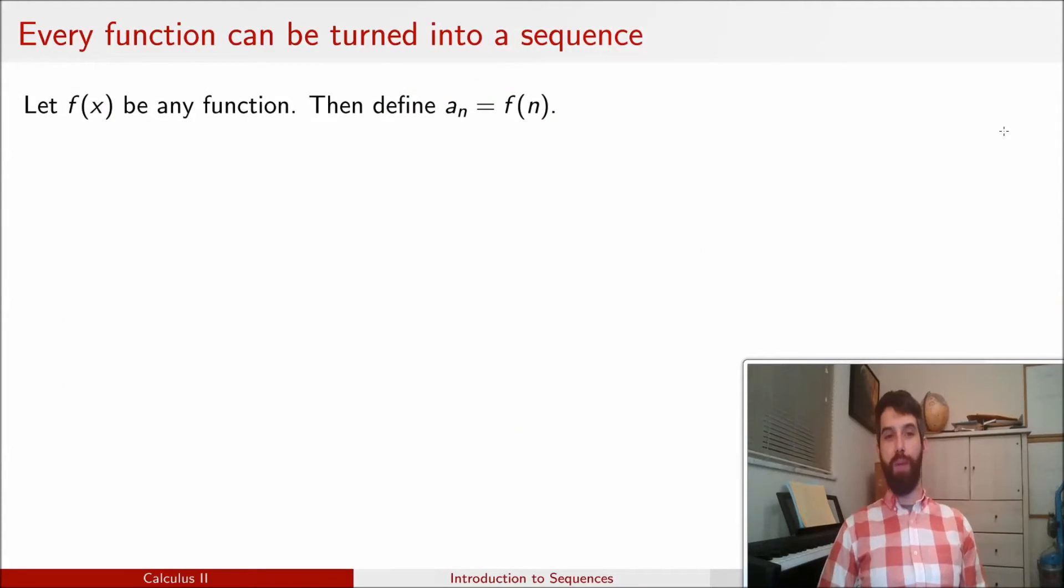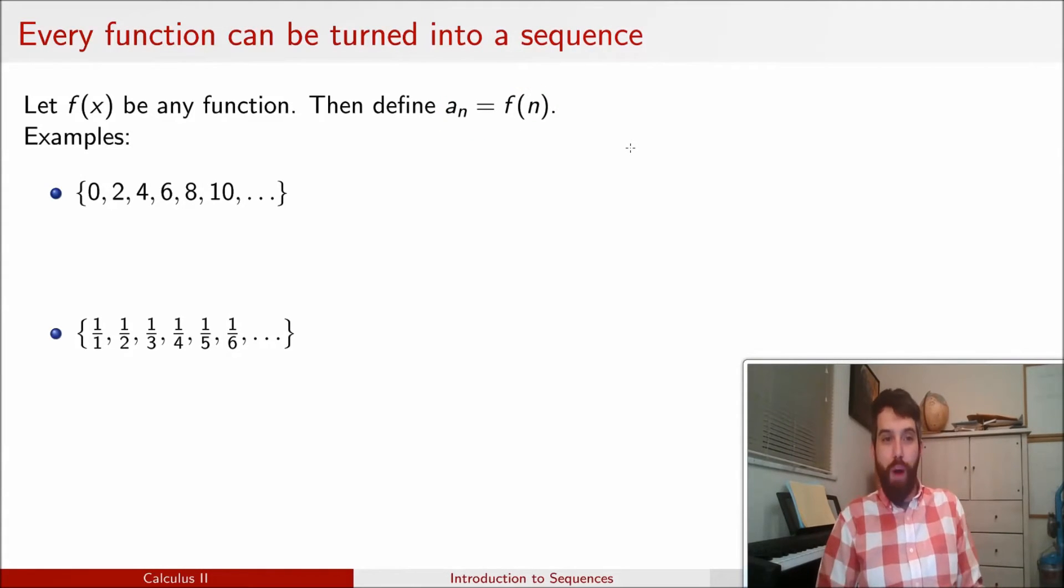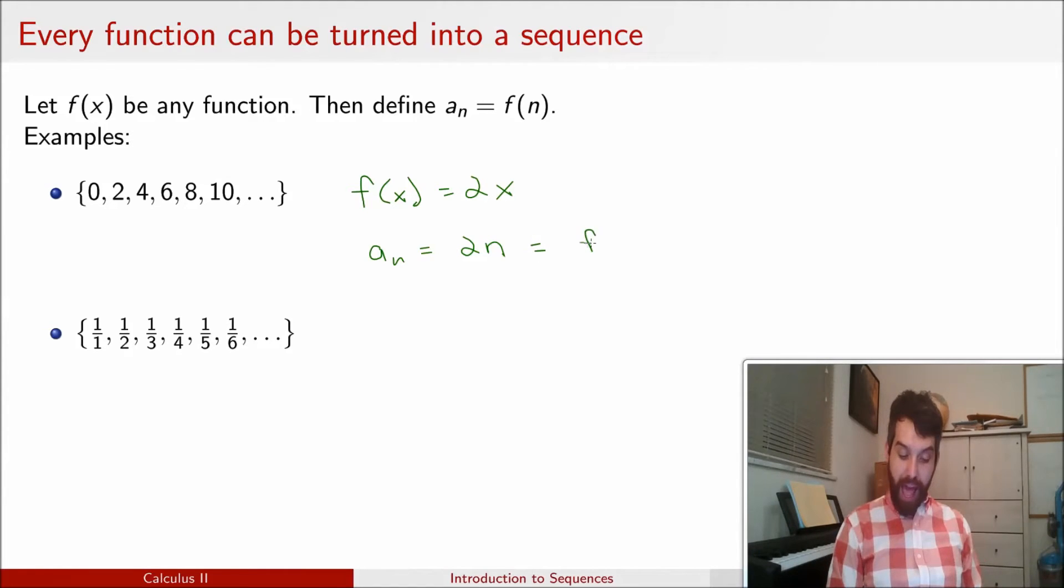One of the most common ways to come up with new sequences is you take any function that you might think of. Any function that we've been dealing with, like x squared or e to the x or sin x or anything like that. And then you sort of restrict the domain. And what you do is you define a_n to just be the values of f of n. So n are restricted to be these positive integers, 1, 2, 3, 4, and so on. So for example, if I take a couple of the ones that I had before, I can imagine a larger function. I can imagine f of x here being equal to twice x. And then we have a sort of special case here, which is a_n, which is going to be twice n. And indeed, this is just the same thing as f evaluated at n.